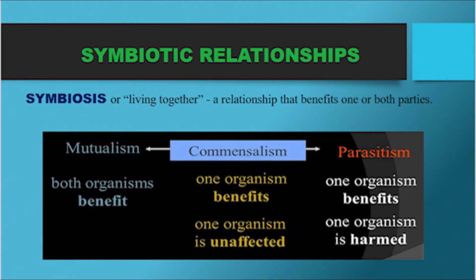Symbiosis, or living together, is a relationship that benefits one or both parties. First, we have mutualism — both organisms benefit each other. Second, commensalism — one organism benefits and one organism is unaffected. Third, parasitism — one organism benefits and one organism is harmed.